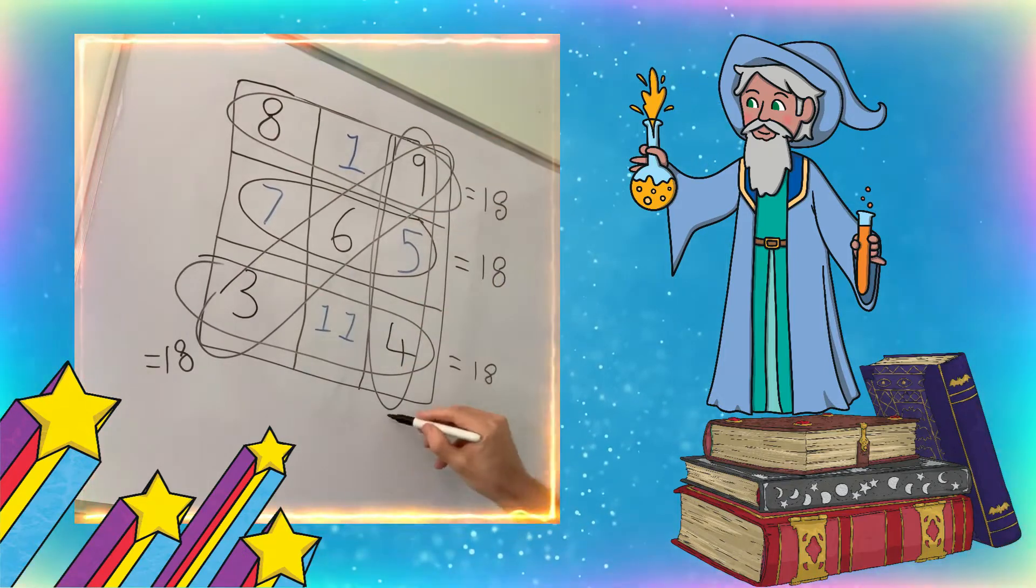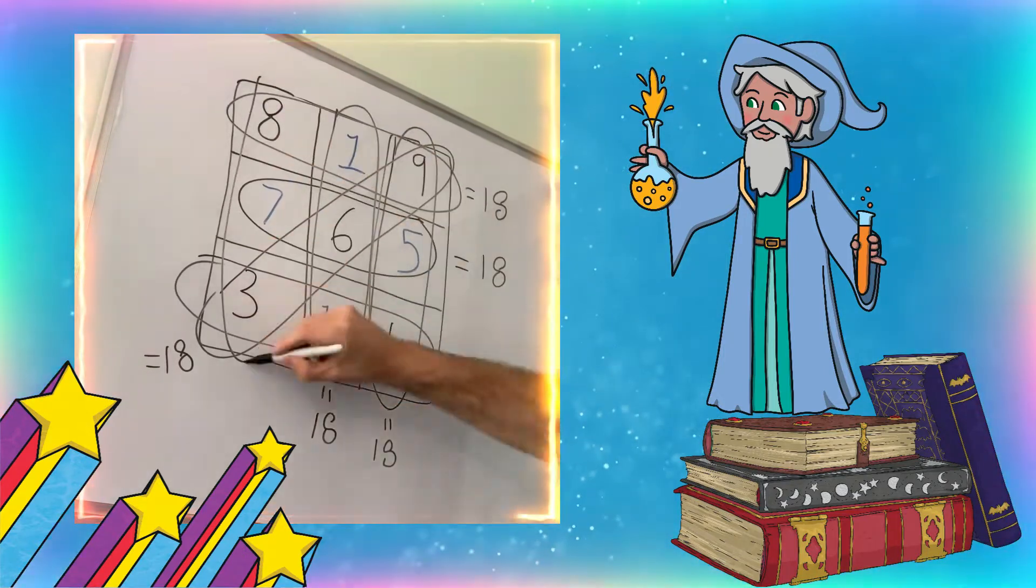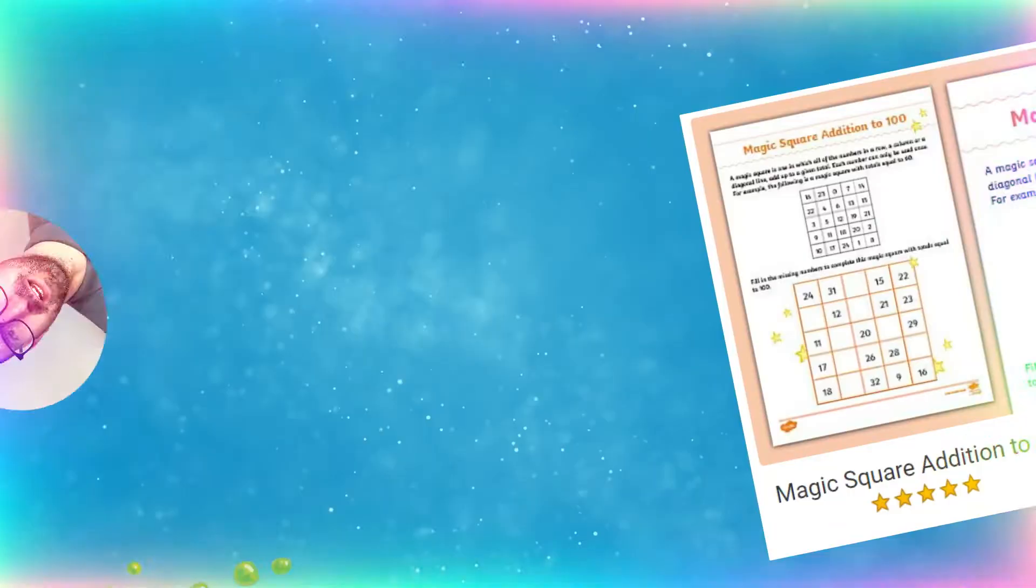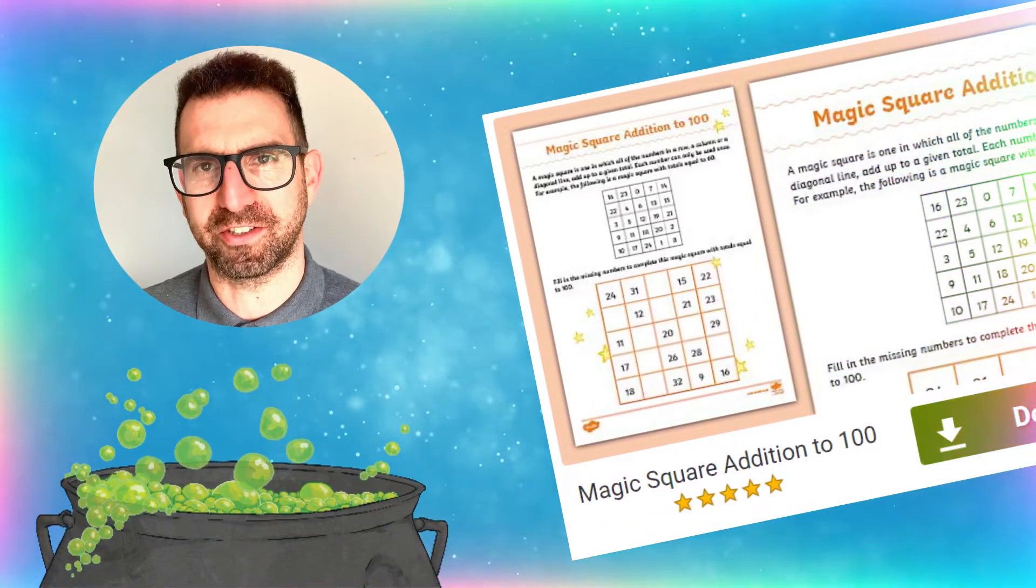By giving some of the numbers, they should be able to complete the first row and then complete the rest. Check out this magic square addition to 100 worksheet.